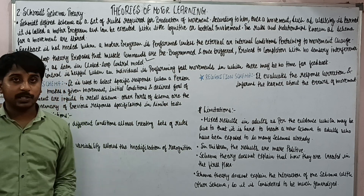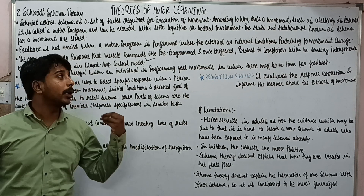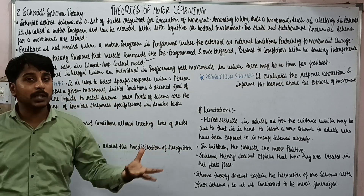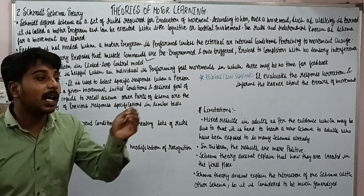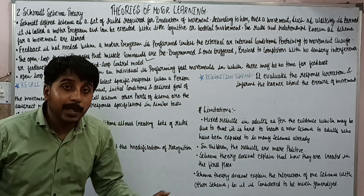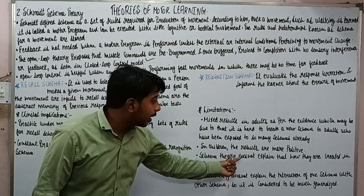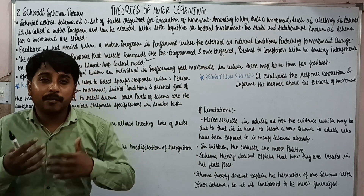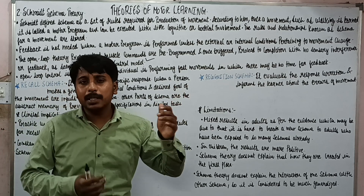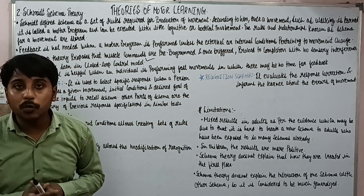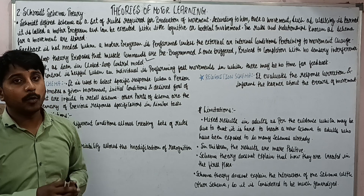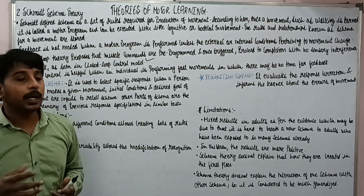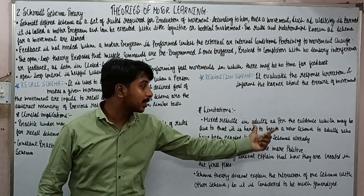The last point is limitations. According to many researches, the schema theories showed very positive results in children, because children still have many things to learn and learning is better in them. In children the results are more positive. But as the age increases, the ability to learn reduces. So schema learning becomes less — it becomes difficult for an individual to store or learn a schema. Mixed results are seen in adults as per the evidence.